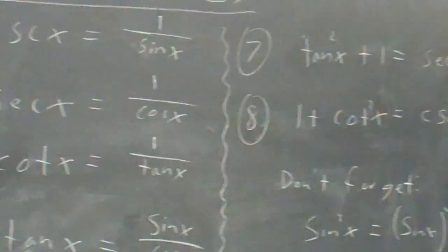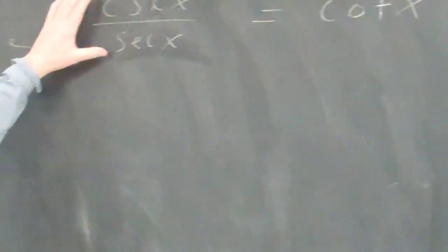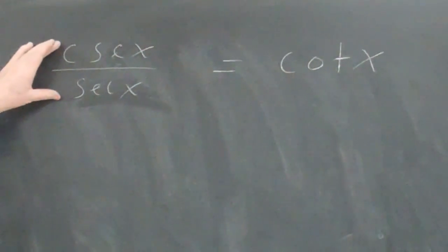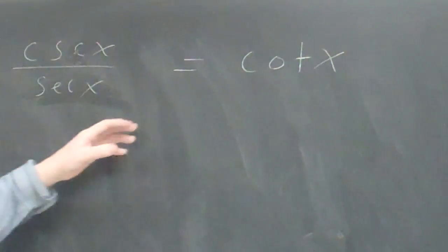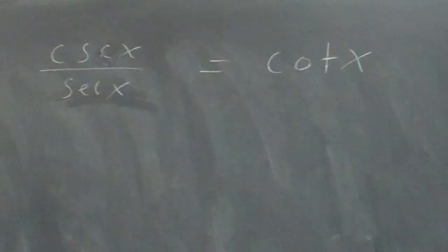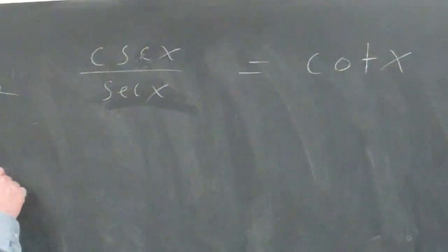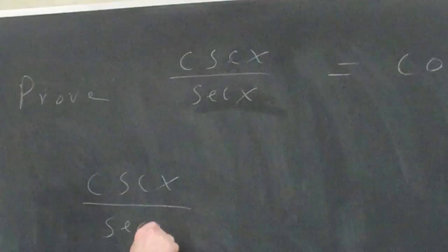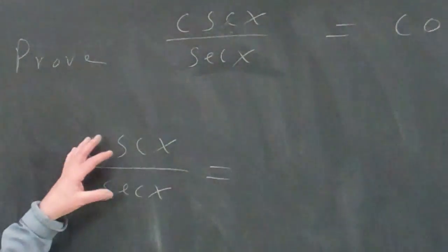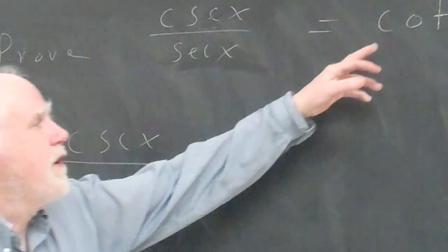Now, where do you start? That's the big thing. A lot of the identities are set up so you start with the left side, but the rule of thumb is you start with the most complicated expression and work your way toward the more simple expression. So I'm going to write cosecant x over secant x and start messing with this until I hopefully get to cotangent x.